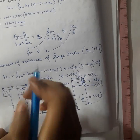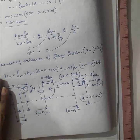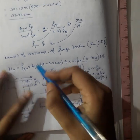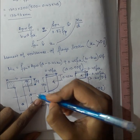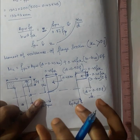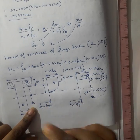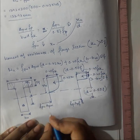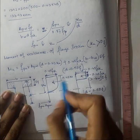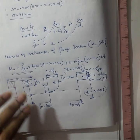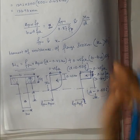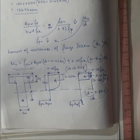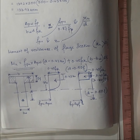The ultimate moment of resistance of the flanged section where the neutral axis falls outside the flange is computed by combining the moment resistance of the web and the flange portion, considering the stress block. This is the formula to apply if xu is greater than df. Thank you for watching this video.